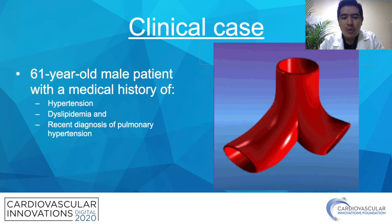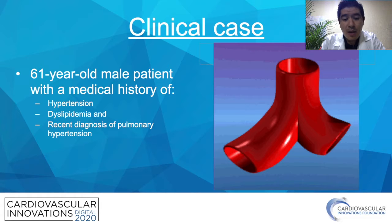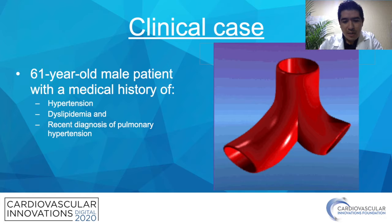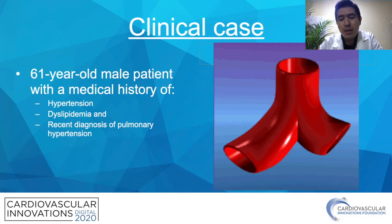Our patient is a 61-year-old with an important history of hypertension, dyslipidemia, and a recent diagnosis of pulmonary hypertension. In this case, our patient presented to the emergency service with hemoptysis on exertion, which required starting a diagnostic protocol.